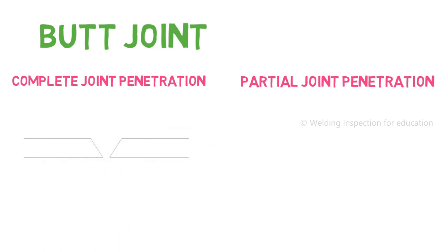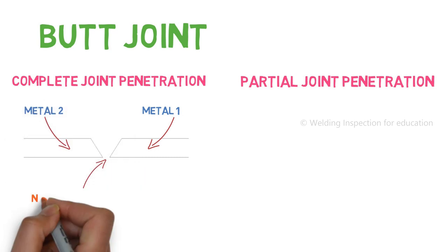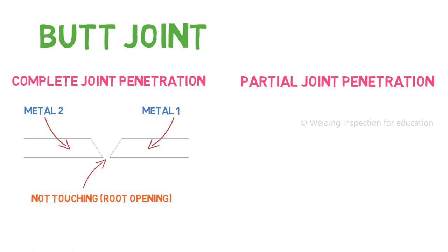As you can see in this complete joint penetration, when you are connecting metal number 1 with metal number 2, that metal is not touching each other. So there is a clear root opening between those two metals. That is why it is considered as complete joint penetration, CJP joint. CJP joint requirement is basically part of the drawing, and whenever there is a CJP joint, there should be welding from the other side, or there should be some backing bar or any support to hold the root for that particular connection.